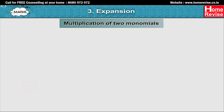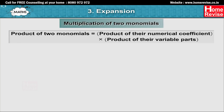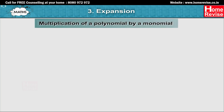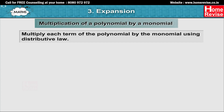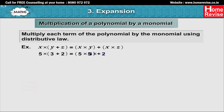Multiplication of 2 monomials: The product of 2 monomials is equal to the product of their numerical coefficients into the product of their variable parts. For example, 5a into 3b is equal to 15ab; 2a into a is equal to 2a squared. Multiplication of a polynomial by a monomial: Multiply each term of the polynomial by the monomial using the distributive law. For example, x into (y plus z) equals x·y plus x·z.